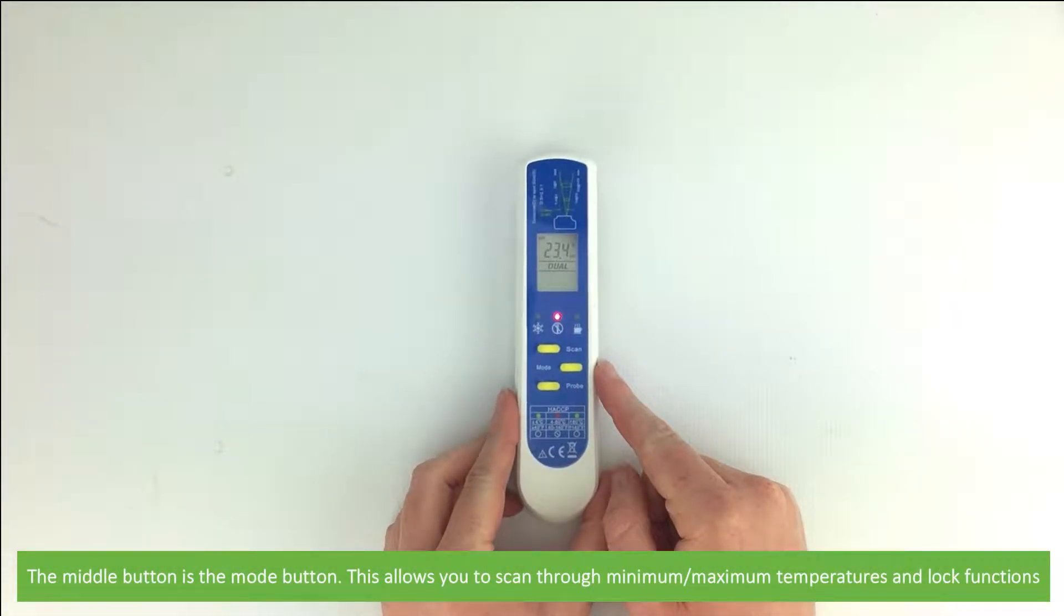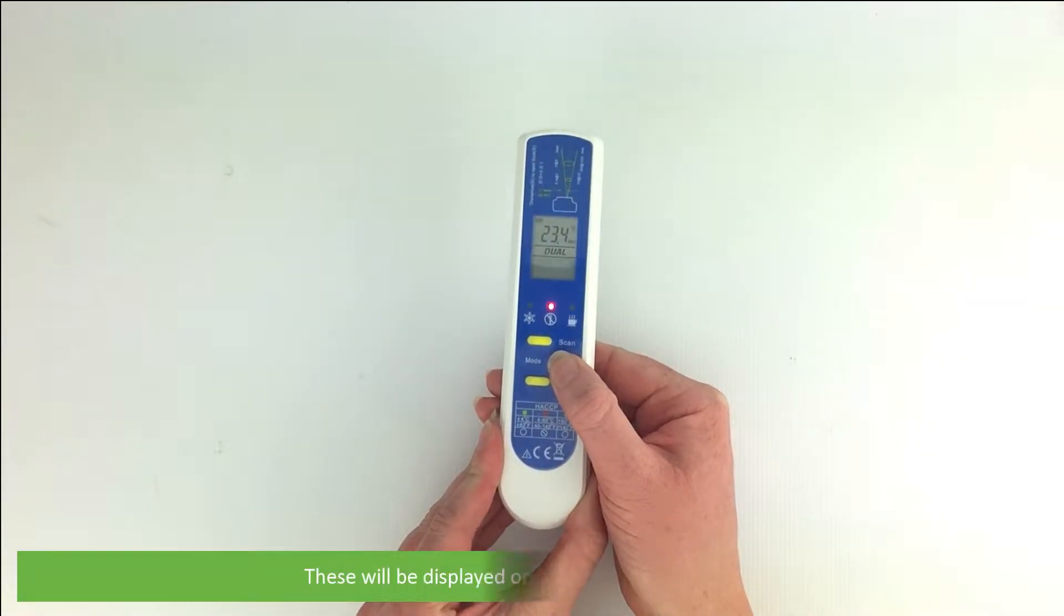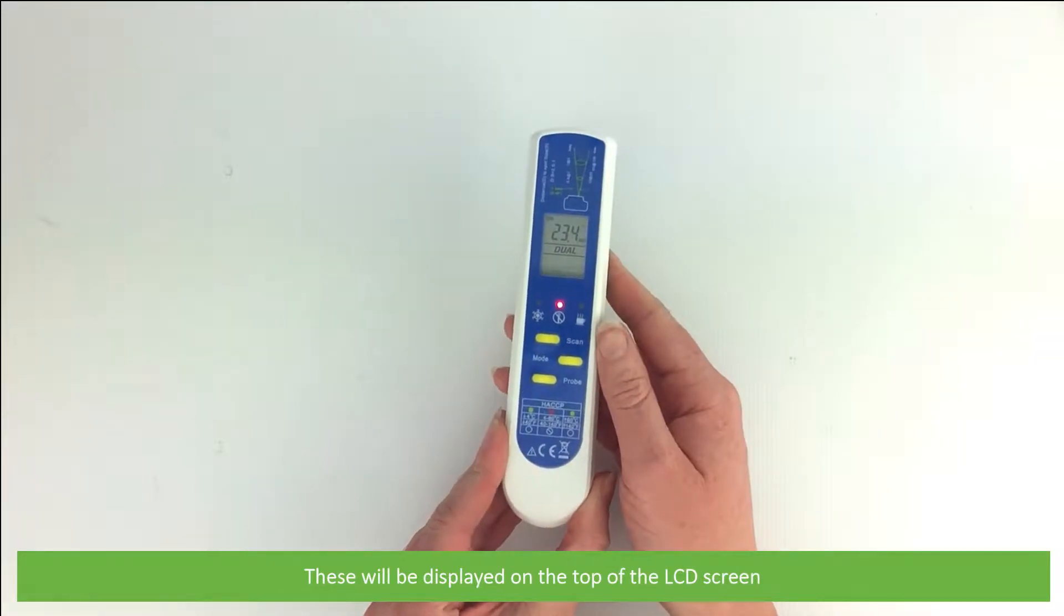The middle button is the mode button. This allows you to scan through minimum and maximum temperatures and lock functions. These will be displayed on the top of the LCD screen.